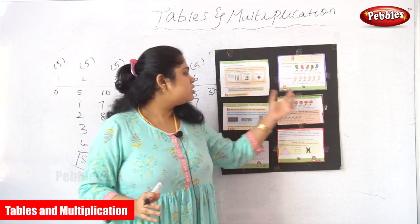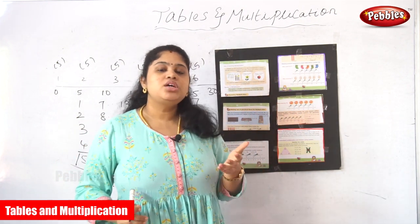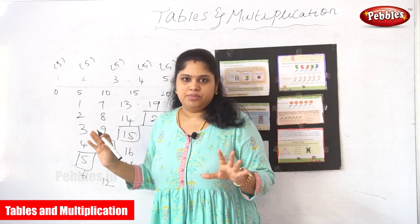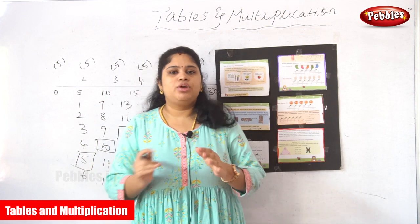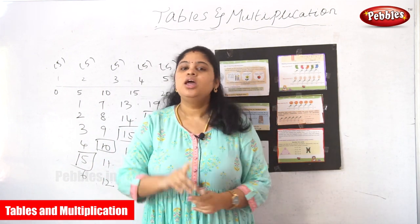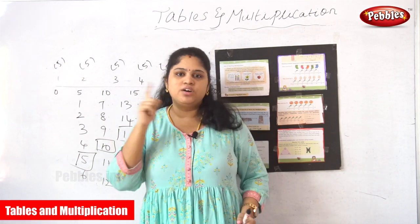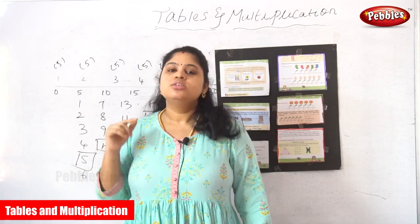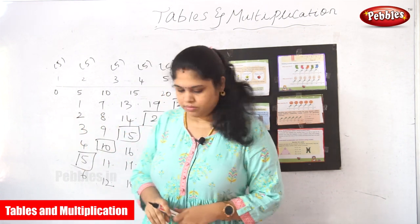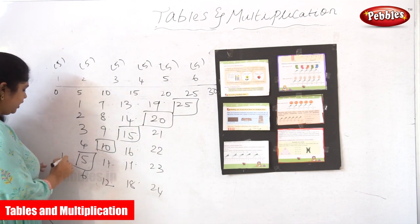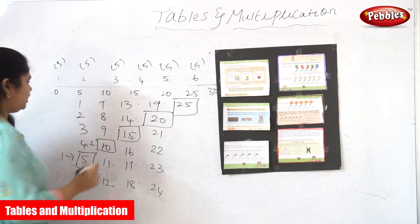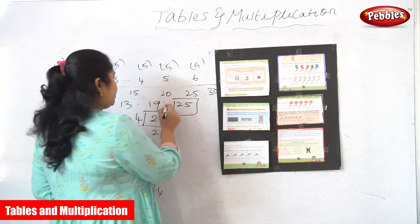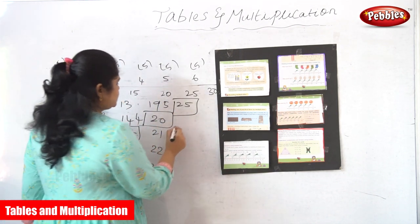I want to give special mention about the five tables. The five times table hugely supports the clock system — everybody knows that. When you are in second or third standard you start reading about how clocks work. To read a clock: 1 is taken as 5, 2 as 10, 3 as 15, 4 as 20, 5 as 25, and 6 as 30.